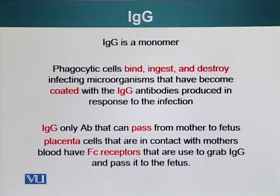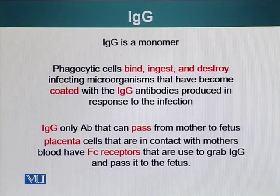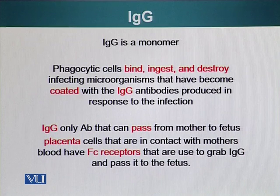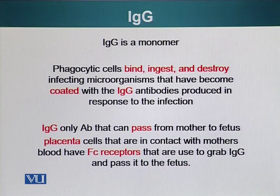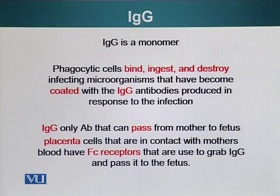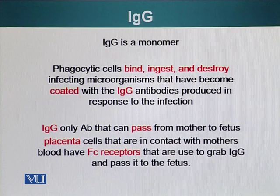The next class is IgG, which is a monomer. Phagocytic cells have receptors that can bind the FC region — the very tip of the tail of an antibody. These phagocytic cells bind the FC region using their special receptors, which causes activation and receptor-mediated endocytosis, engulfing the pathogen. IgG is also the only antibody that can pass from mother to fetus through the placenta.